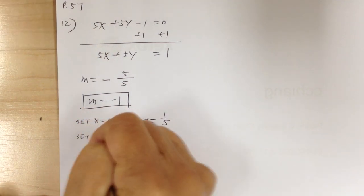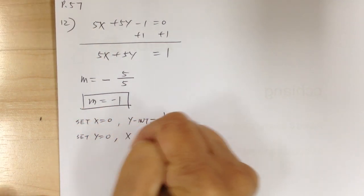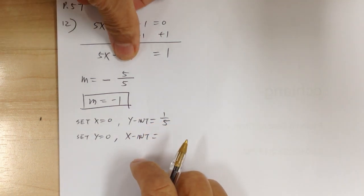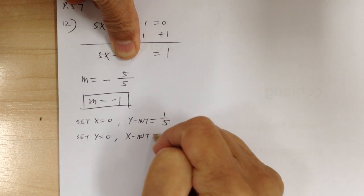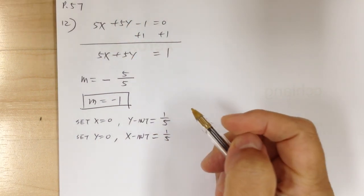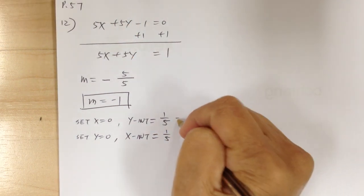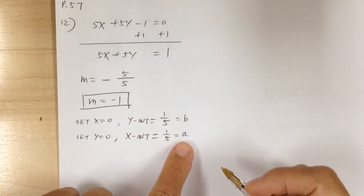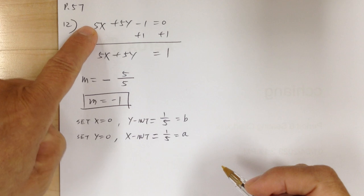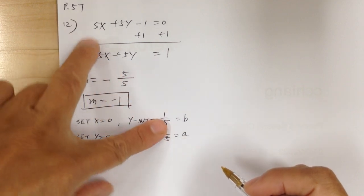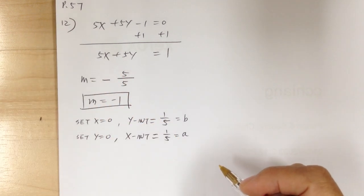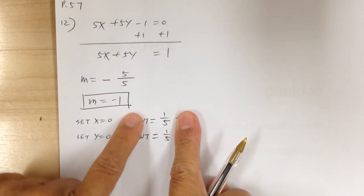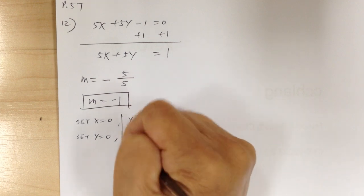Set y equal to 0 to get the x-intercept — divide both sides by 5, so x-intercept equals 1 over 5. Note: this b and this a in the formula are different from the coefficients labeled a in the equation — they use the same letter for different things. Using x-intercept and y-intercept directly is clearer.